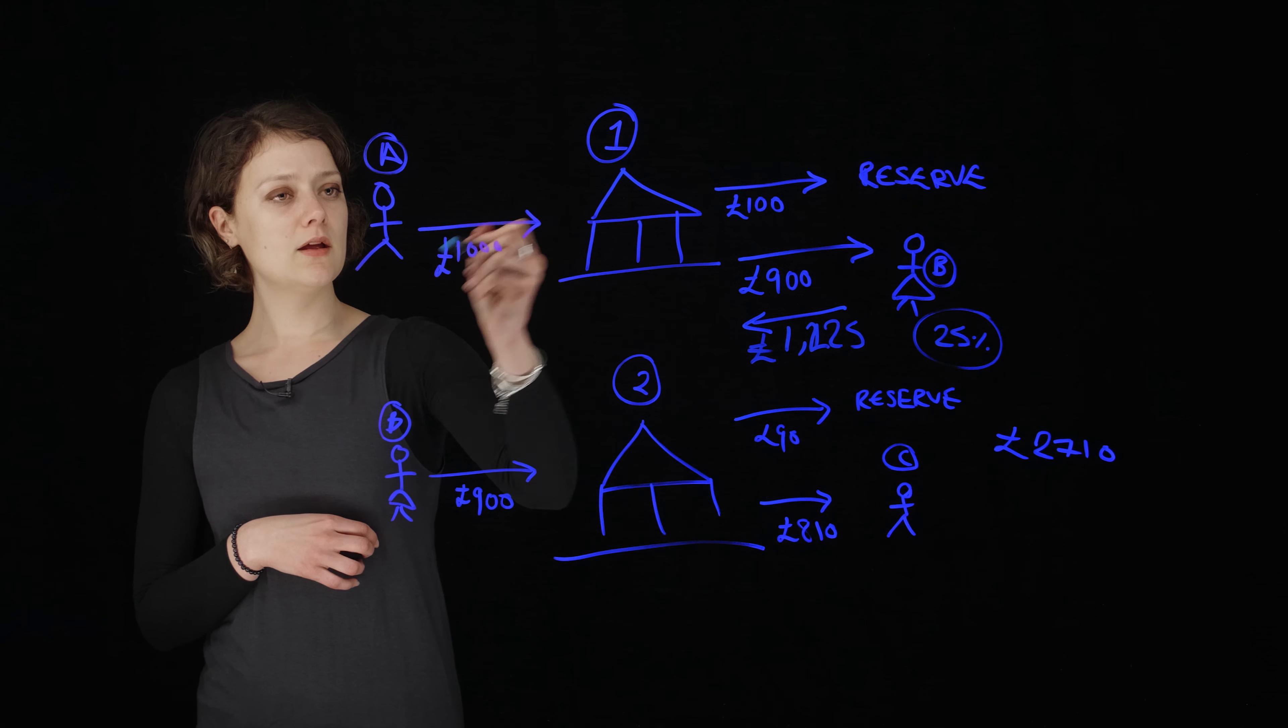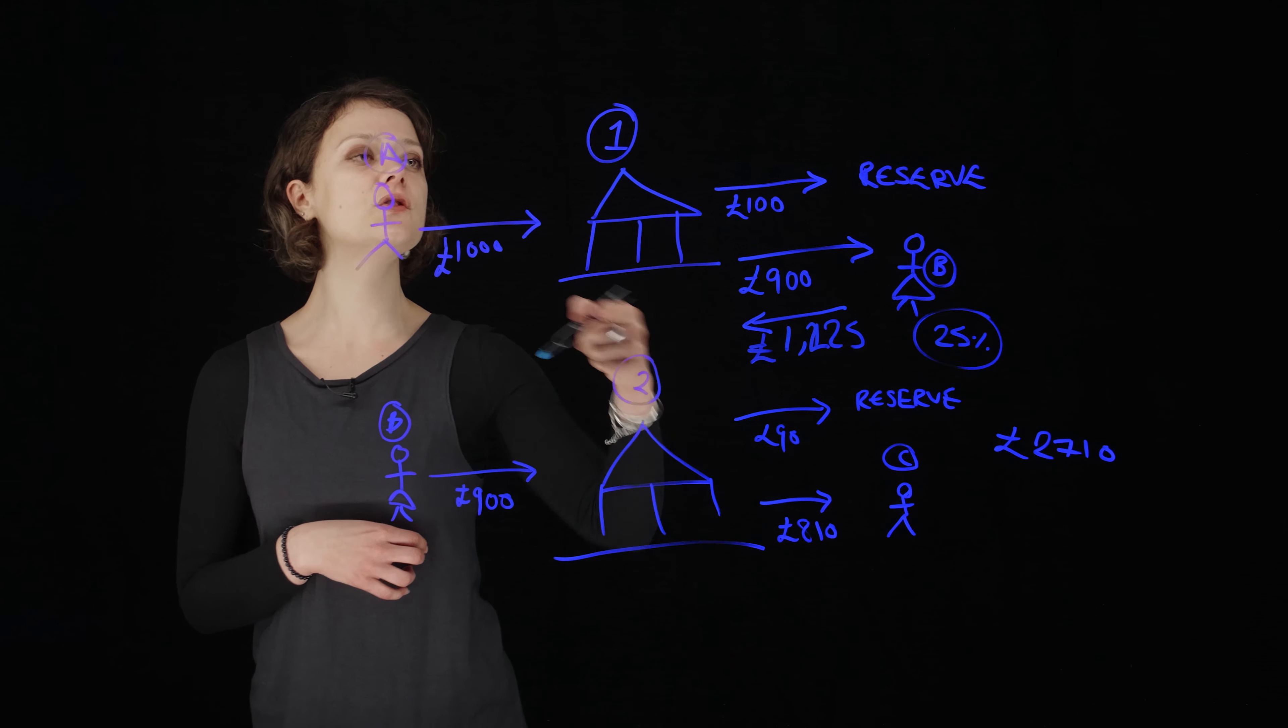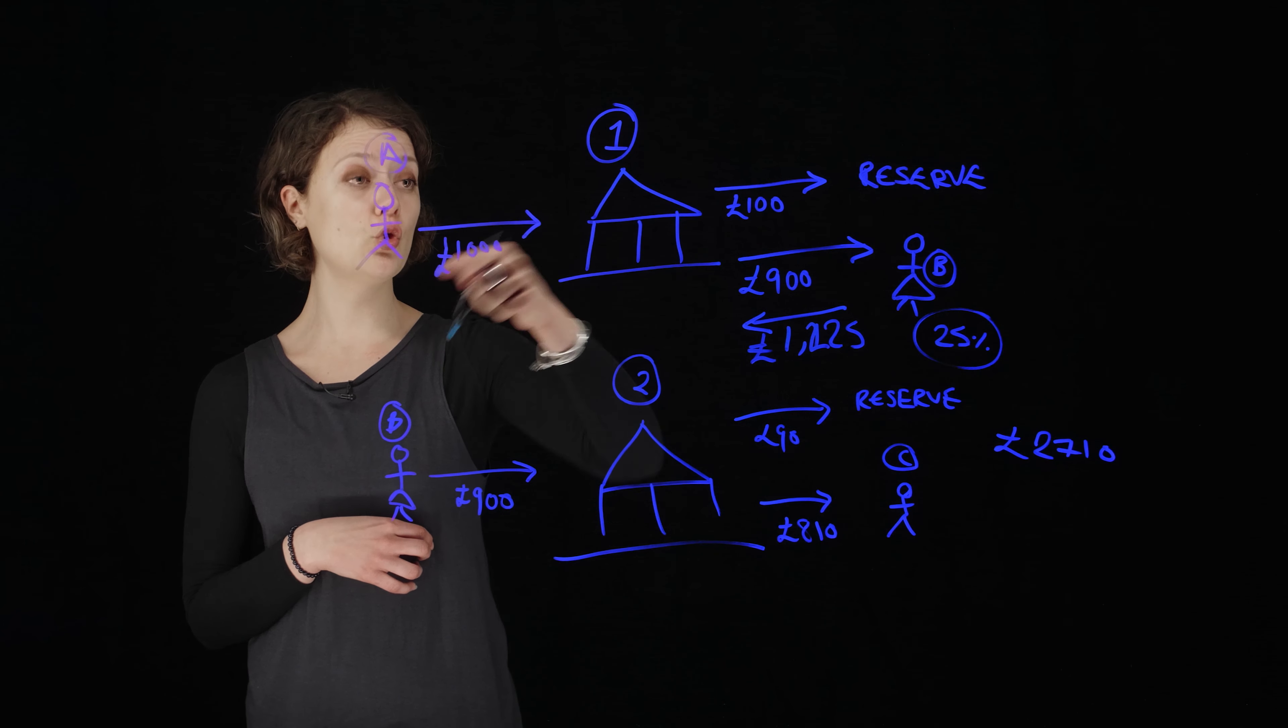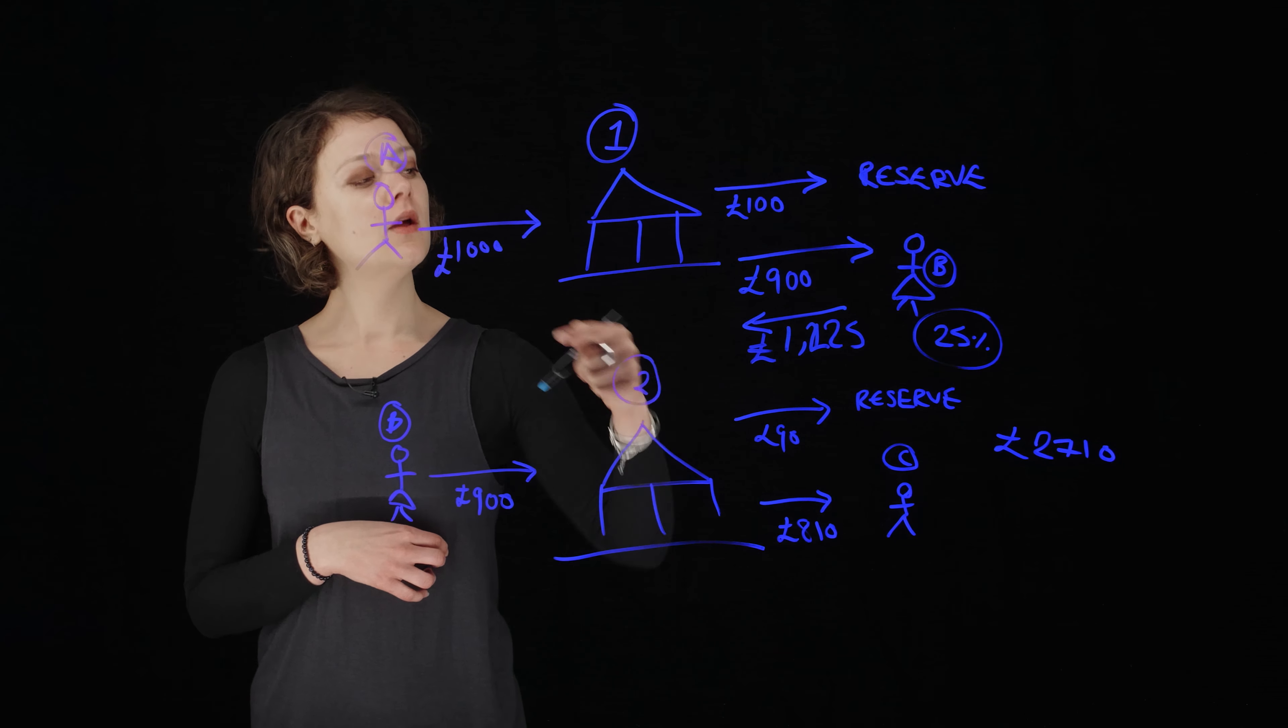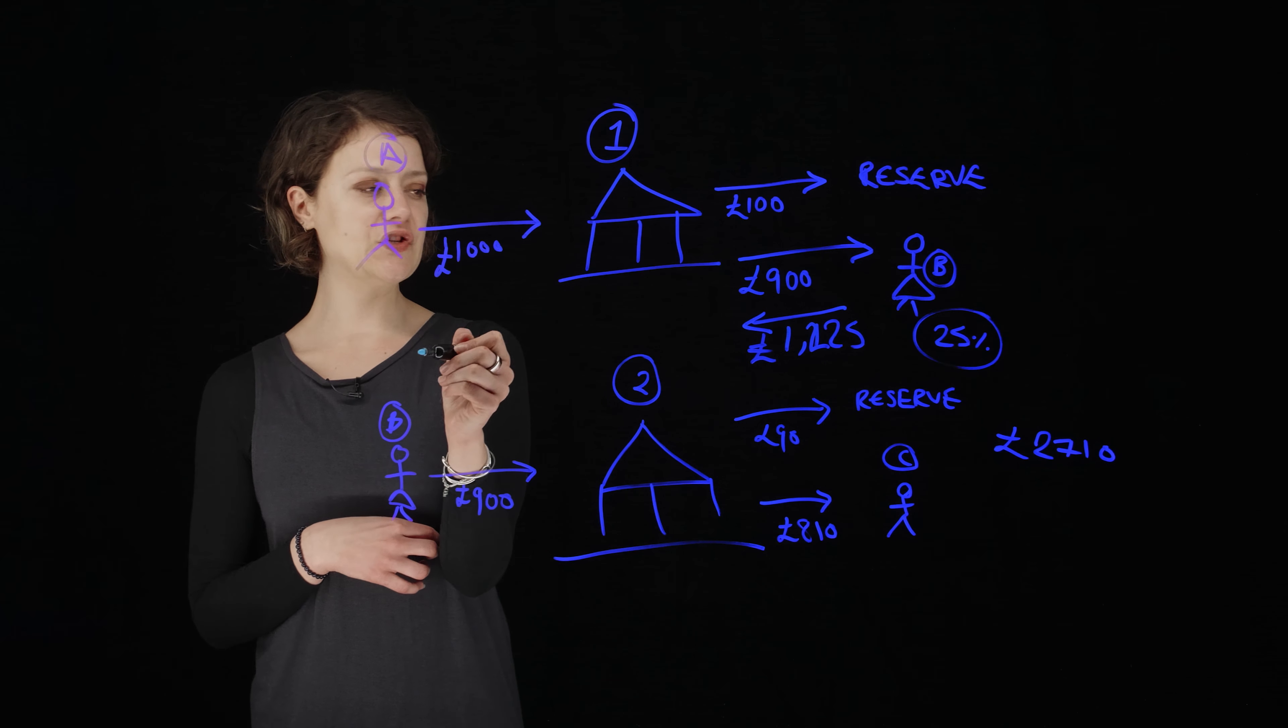And then the bank is going to give this person a little bit of a reward for putting their money in the bank, for choosing bank one rather than bank two. They want you to come to their bank because if you don't come to their bank and give them your money, they can't then lend it to somebody else and make any money on top of that. So they're going to give person A their money back with a little bit more when person A wants to come to take it out.